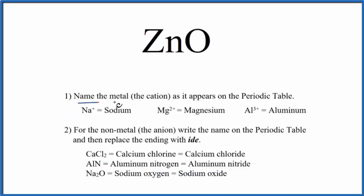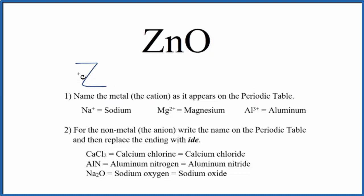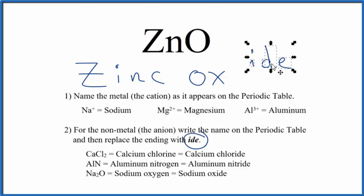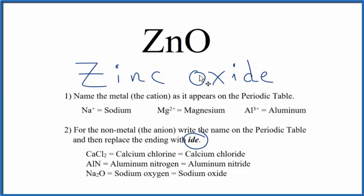First, we'll write the name for the metal as it appears on the periodic table. Zn — that's the metal — so we'll write zinc. And then the name for the non-metal, also as it appears on the periodic table. O, that's oxygen, lowercase o, and we'll replace the ending with -ide. So the name for ZNO is zinc oxide.